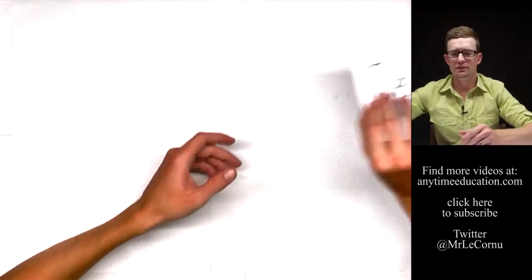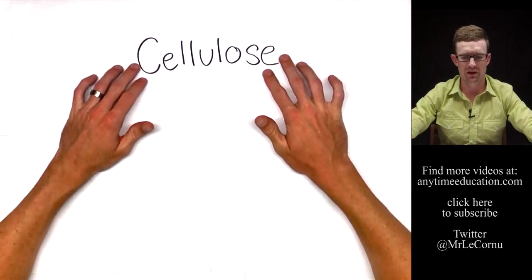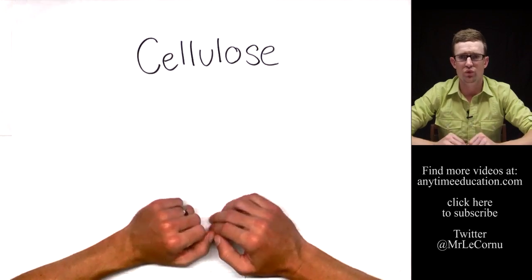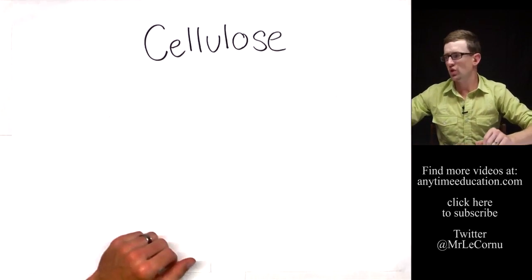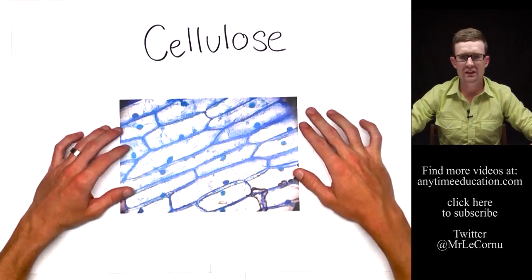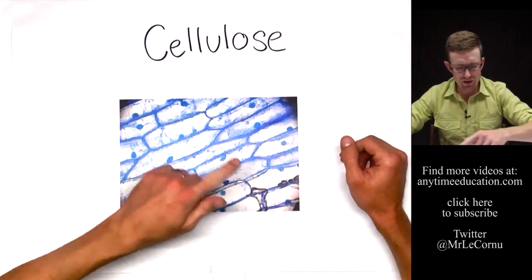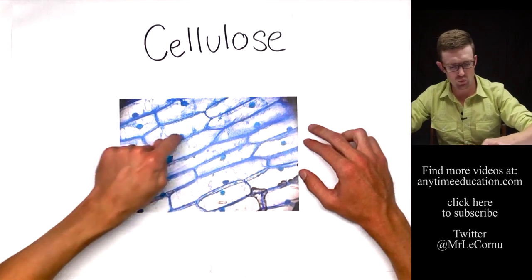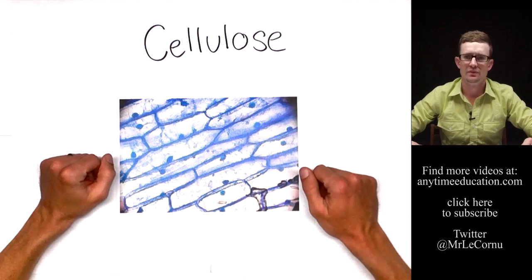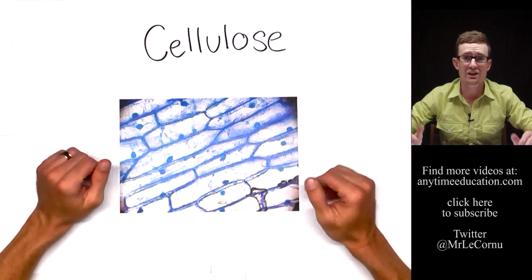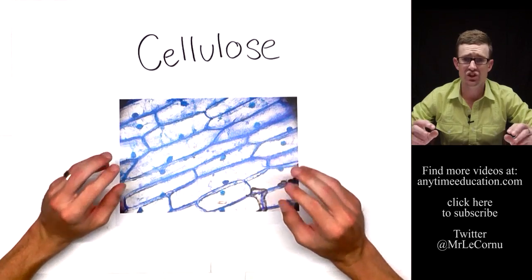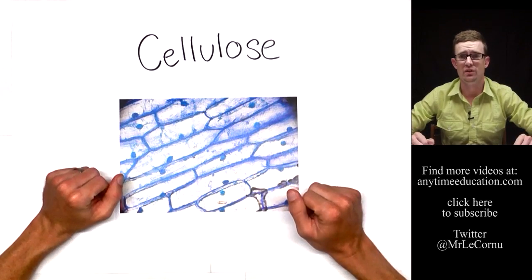Cellulose is a polysaccharide that performs a structural role. It's a very strong polysaccharide and it's found in the plant cell wall. Here I've got some onion cells — the cell wall of these onion cells is made up of cellulose. Cellulose is also the major component in wood. So cellulose is a structural polysaccharide.